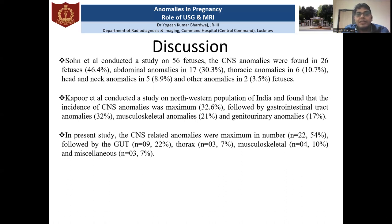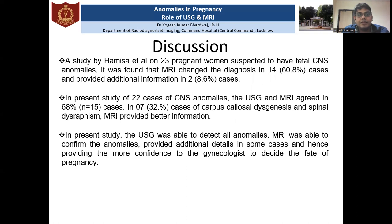Multiple studies have shown that CNS abnormalities are most common, followed by abdominal abnormalities. In the present study also, CNS-related abnormalities were maximum in number, forming 54% of the total abnormalities, followed by genitourinary tract abnormalities, and thoracic and musculoskeletal abnormalities. We compared diagnoses made on ultrasound with those on MRI and concluded that ultrasound was able to detect all the abnormalities, while MRI confirmed the anomalies and provided additional details in some cases, giving more confidence to the gynaecologist to decide the management of the pregnancy.